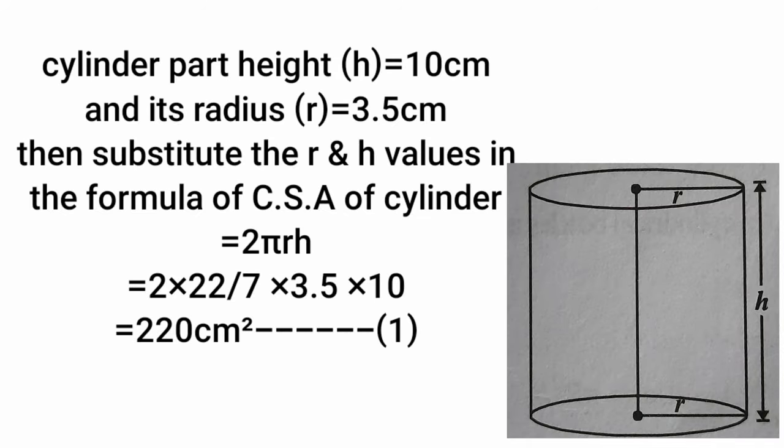The cylinder part has height h equals 10 cm and radius r equals 3.5 cm. Substituting r and h values in the formula: curved surface area of cylinder equals 2πrh, that equals 2 × 22/7 × 3.5 × 10, which equals 220 cm². Take it as equation 1.